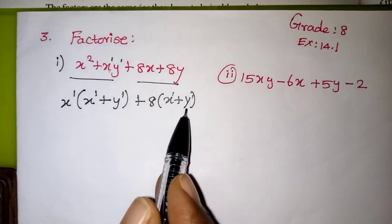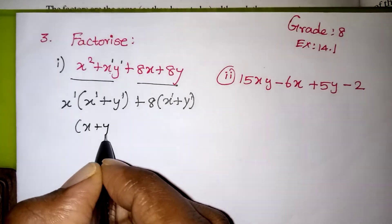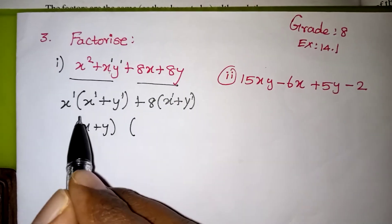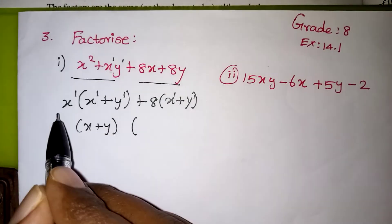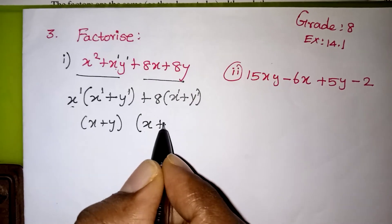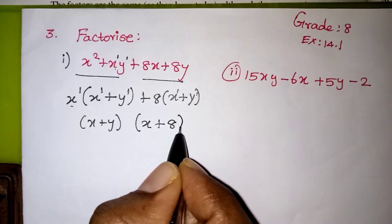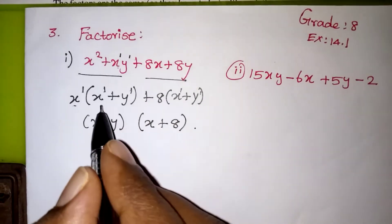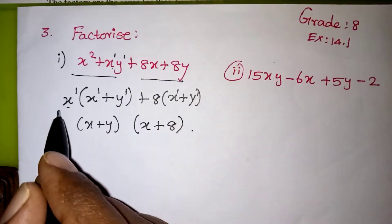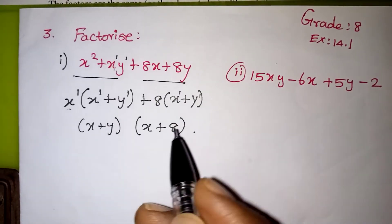We have (x + y) as common in both terms, so take (x + y) outside. The remaining from the first term is x and from the second term is 8. So the answer is (x + y)(x + 8). That is your factorization value.